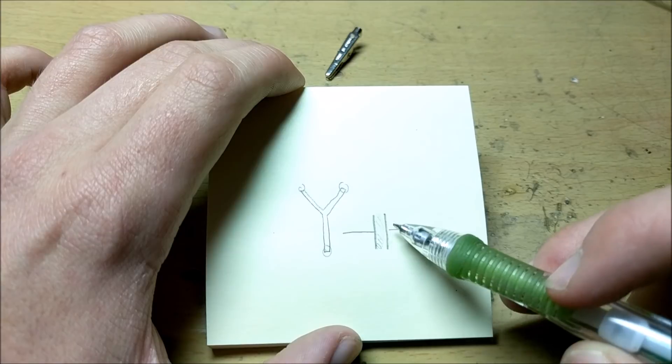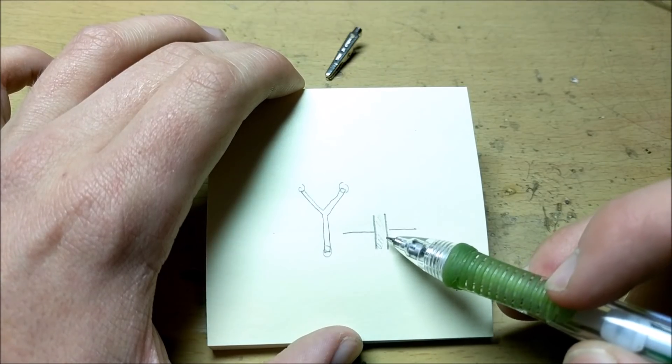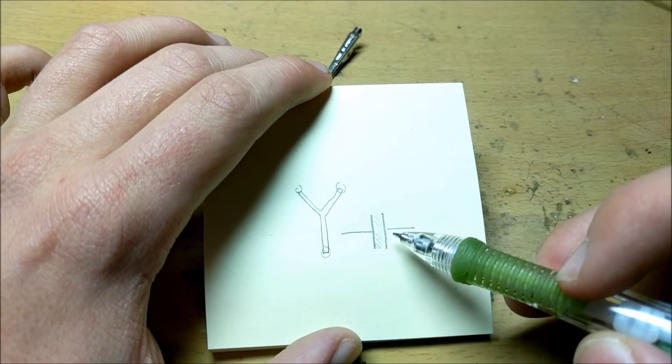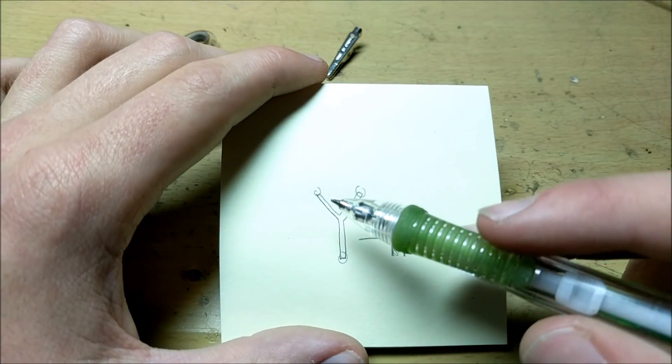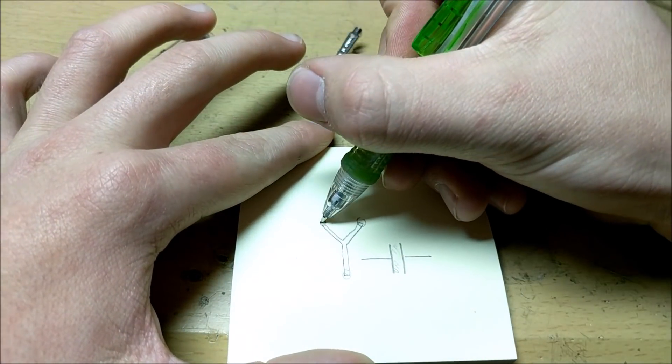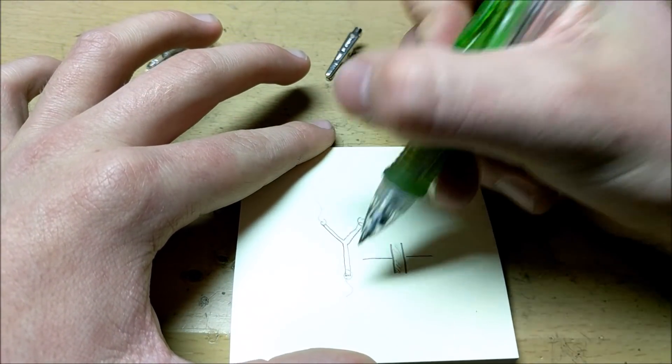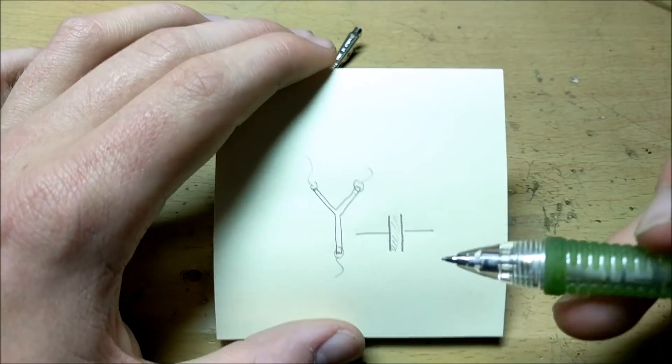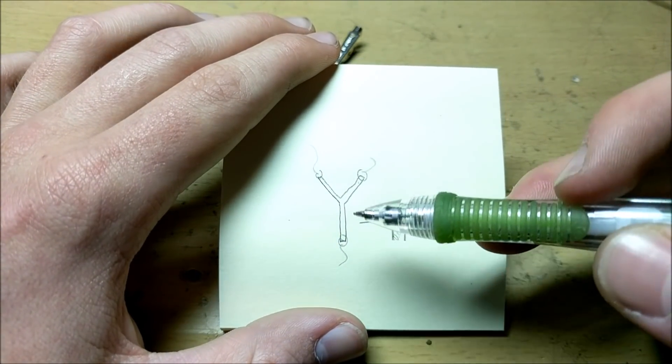And based on the surface area of these capacitors and the distance between them, you can change the capacitance between it. Now this Y shape with wires coming out of each end looks nothing like a traditional capacitor. You've got tiny little plates on each end separated by a huge area.